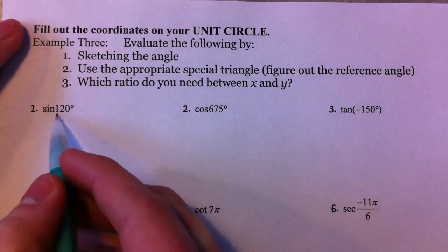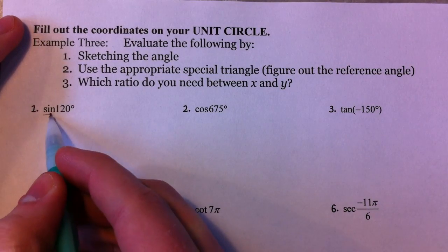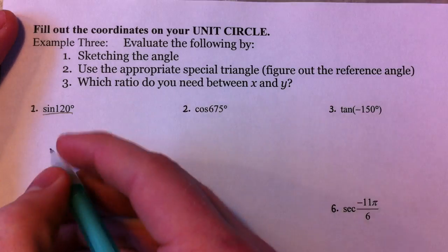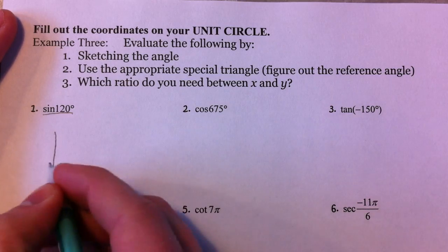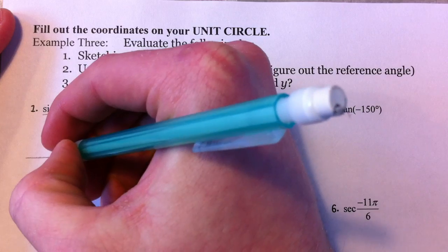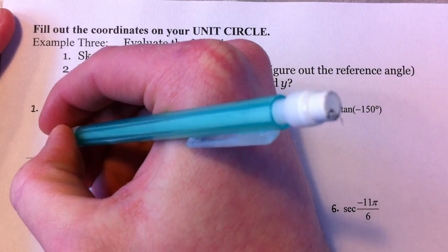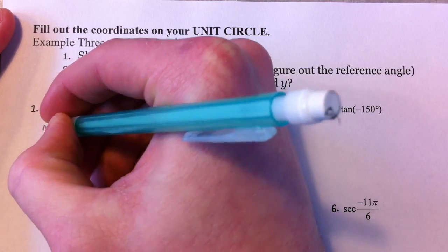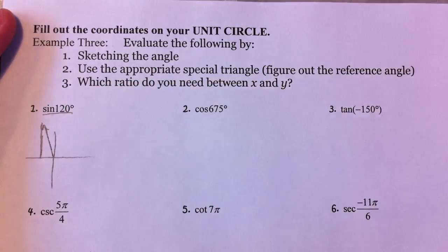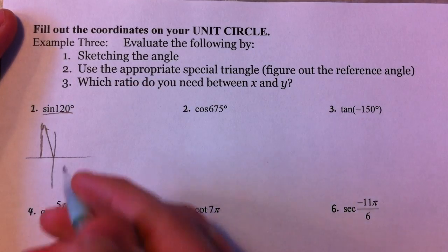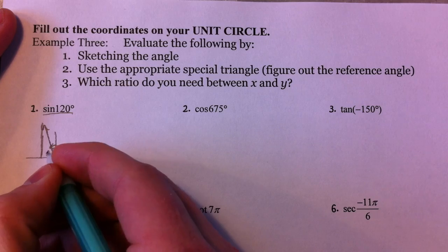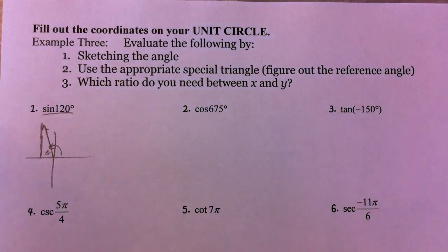The first thing I do every time I'm asked to find the sine of 120 is draw a picture. 120 is 30 degrees past 90, and so I'm going to emphasize that. So this is 120, and I'm going to deal with this being my reference angle.